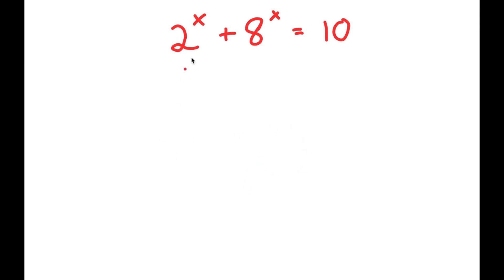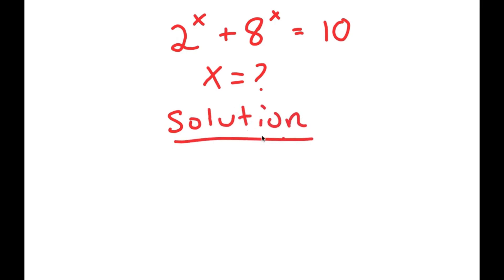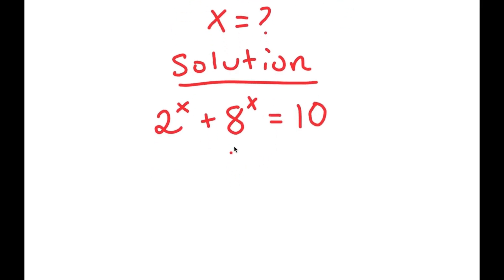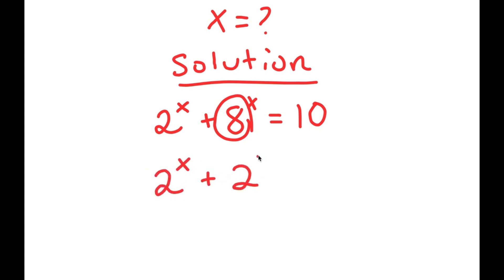In this problem, I have 2 to the power of x plus 8 to the power of x is equal to 10. I want to find the value of x. So for my solution, I get 2 to the power of x plus 8 to the power of x is equal to 10. Now, I can rewrite 8 as 2 to the power of 3, so I get 2 to the power of x plus 2 to the power of 3, to the power of x, is equal to 10.